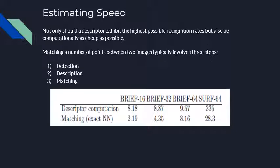Now let's look at the speed of BRIEF. Matching typically involves three steps. First, detection: in SURF, the first step can involve a costly scale-space search for local maxima. In the case of BRIEF, any fast detector such as CENSURE or FAST can be used. Second, description: we observe a 35 to 41-fold speed-up over SURF, and the time for performing and storing the tests remains virtually constant. Third, matching: we observe a 4 to 13-fold speed-up over SURF. The matching time scales quadratically with the number of bits used in BRIEF, but the absolute values remain extremely low within the useful range.